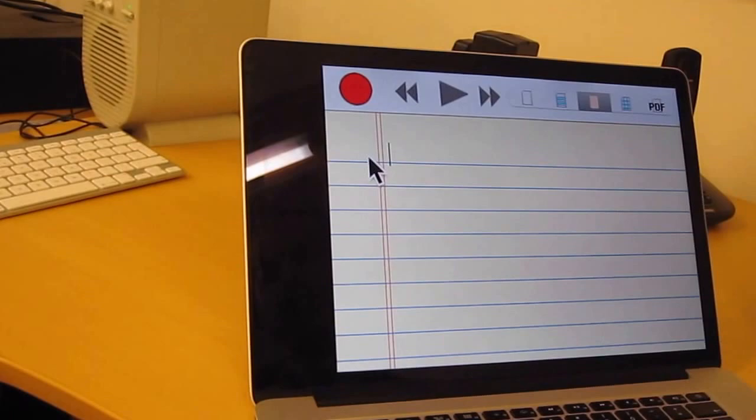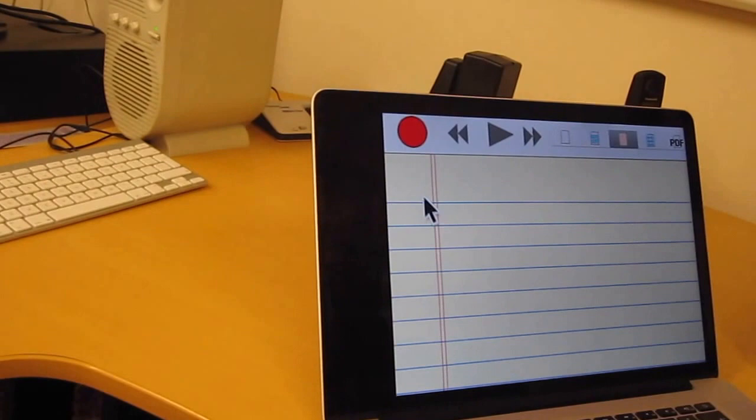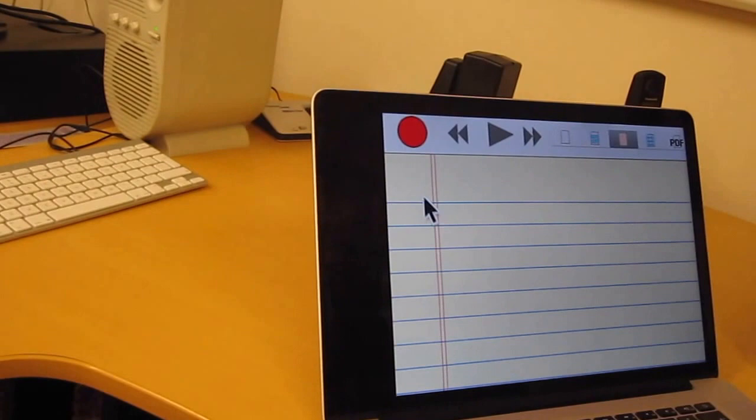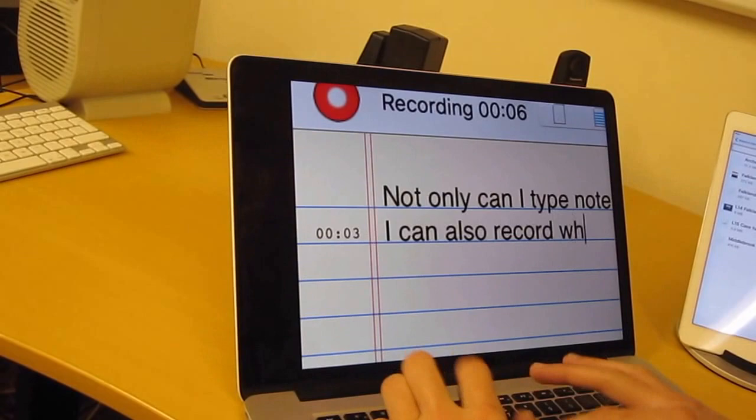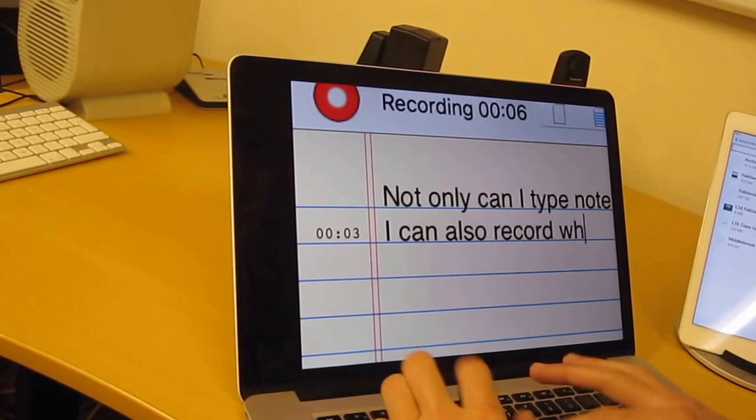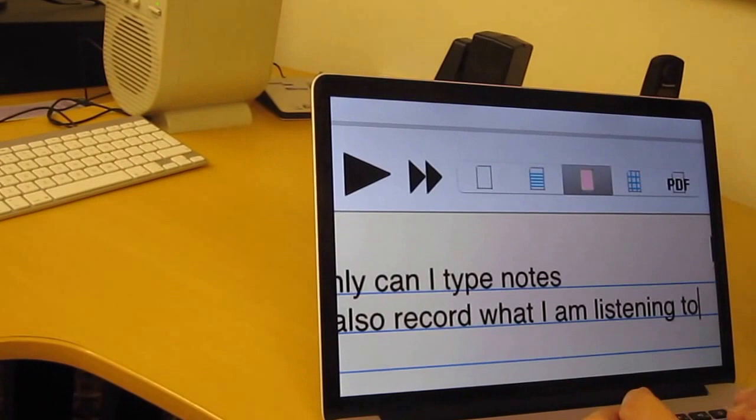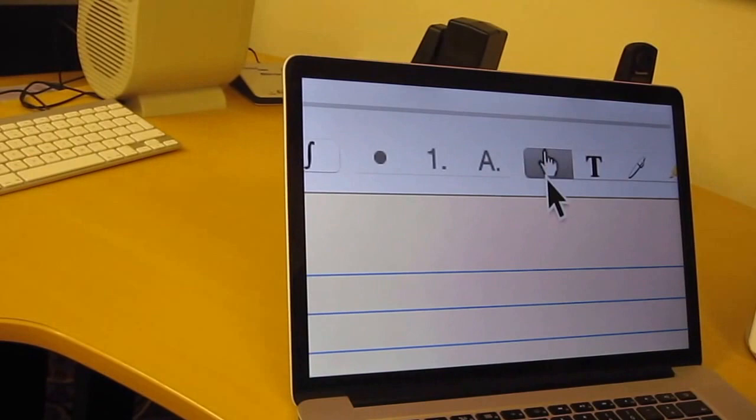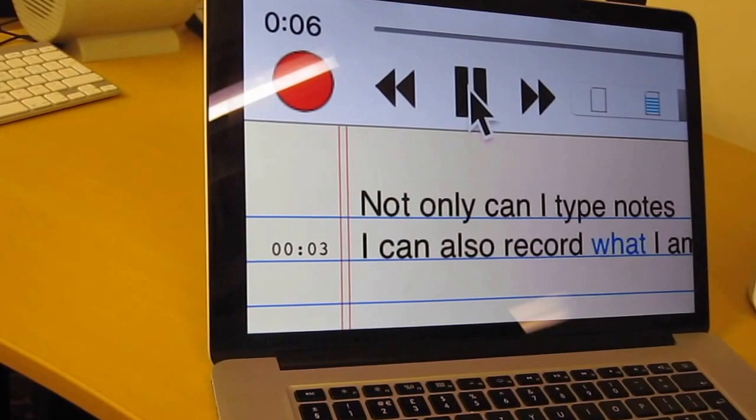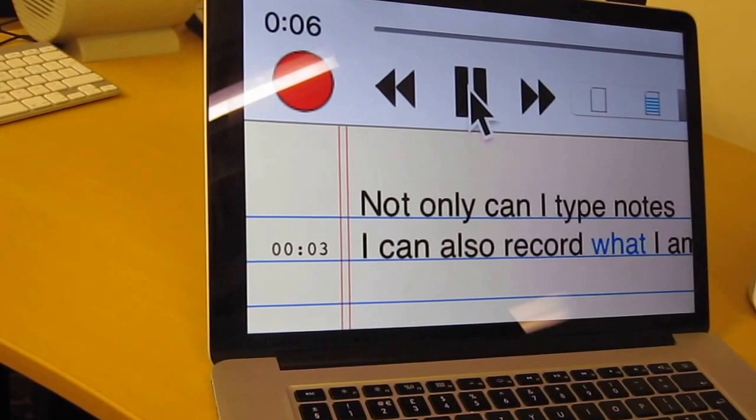It is not as advanced as Word or Pages. You will not be writing essays in this. As a text editor, it is fairly basic. But the beauty of what it does is not only can I type notes, but I can also record what I am listening to. But then, when we are looking back at these notes, if there is something that I, as a student with sight loss, missed, I can simply change the tool that I am working with from typing to the hand tool. I can now select this time in the recording and play it straight back.